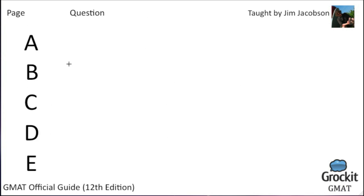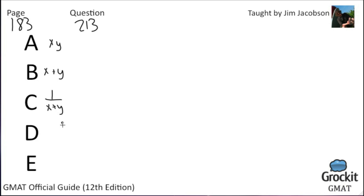Moving on to page 183, number 213. Answer choices: xy; x+y; 1/(x+y); xy/(x+y); (x+y)/xy. In an electric circuit, two resistors with resistances x and y are connected in parallel. If r is the combined resistance, the reciprocal of r equals the sum of the reciprocals of x and y. What is r in terms of x and y?